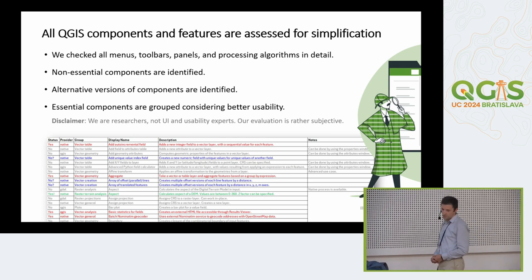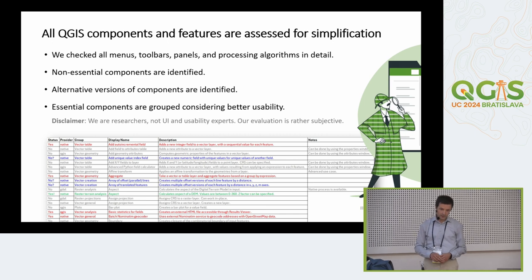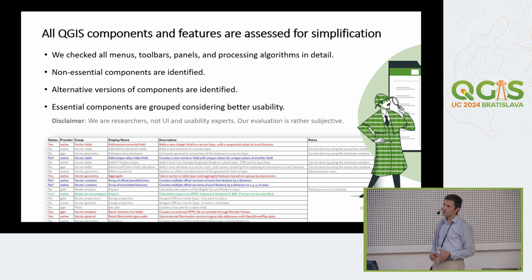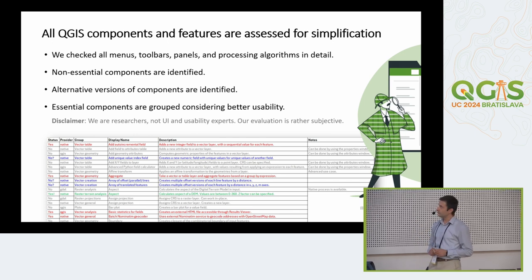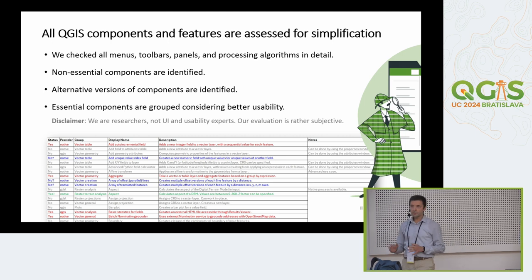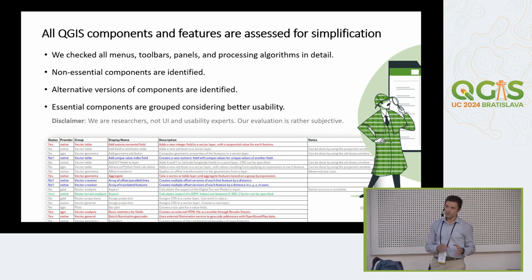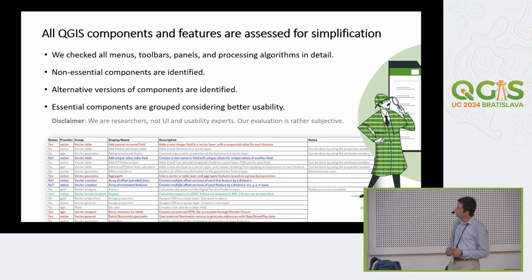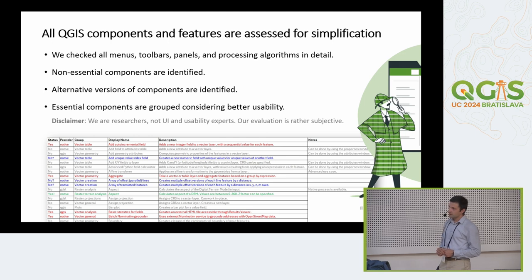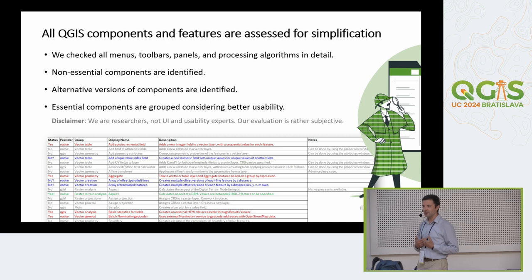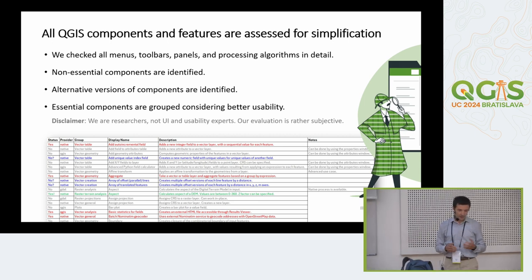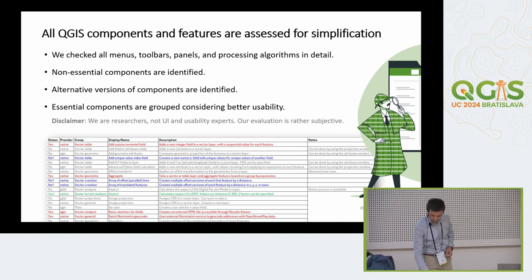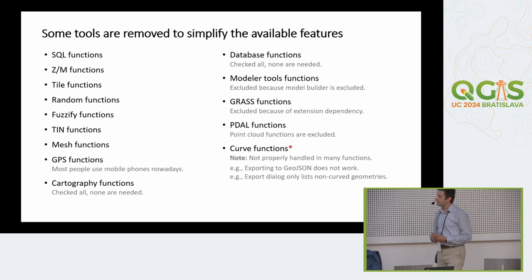In order to decide what to do, we looked at all QGIS components and features in a detailed way. We checked all menus, toolbars, panels, and processing algorithms, and tried to identify the ones that are non-essential for our purpose. We also checked alternative versions provided by QGIS and identified the simpler ones where more than one option was available. We tried to group the essential components considering better usability. As a disclaimer — we are researchers, not usability experts or UI designers, so our evaluation is rather subjective, but I think it is quite representative of the needs of secondary education and citizen science activities.